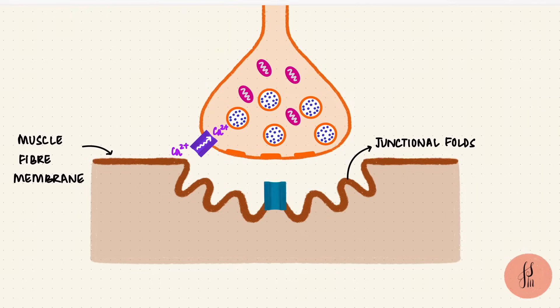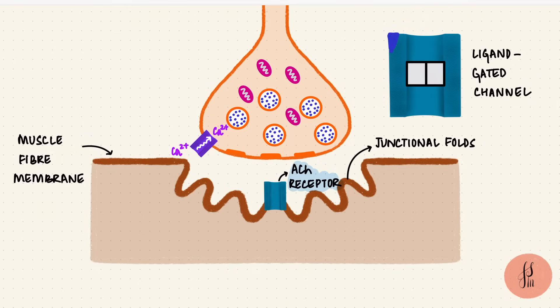At the crest of the folds, there are receptors for acetylcholine. These are ligand-gated channels, which means they open when a ligand binds. The ligand here is acetylcholine.